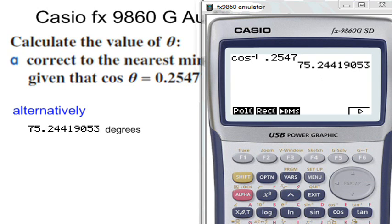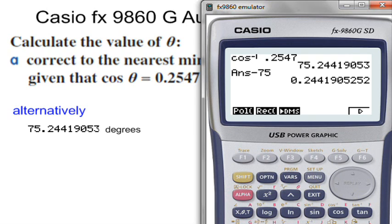Another way to do it, I'm going to take away 75 from my value to leave me just with the decimal component. So it's 0.244 of 1 degree.